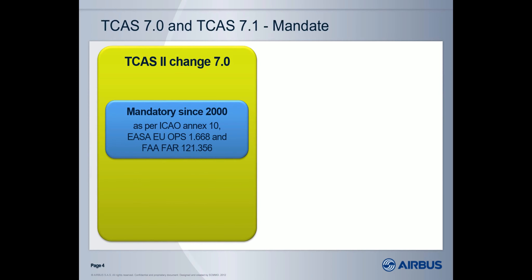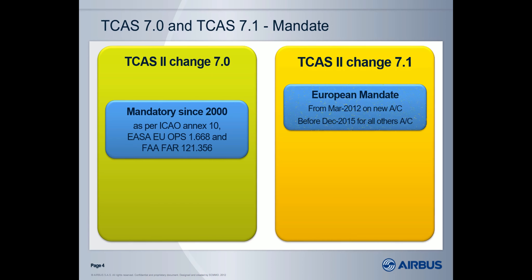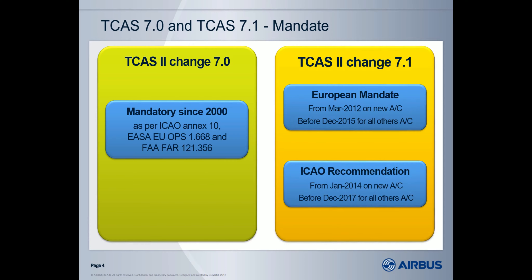The TICAS Change 7 was the first mandated since the year 2000, as per ICAO and also as per the EASA EU OPS regulation and the FAR regulation. Then we have developed at Airbus the TICAS Change 7.1, which has a European mandate to be installed on aircraft produced from March 2012 and also to be retrofitted on all other aircraft before December 2015. In addition, ICAO has also recommended the installation of Change 7.1 on all aircraft produced from January 2014 and to be retrofitted before the end of 2017 on all other aircraft.